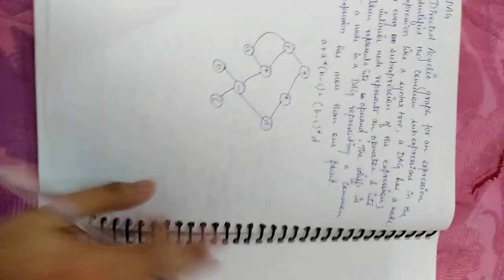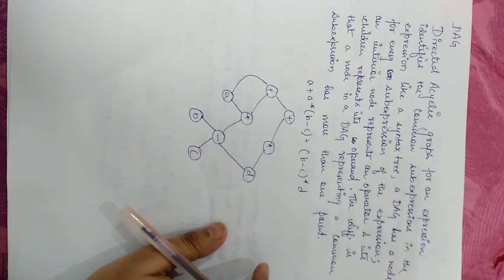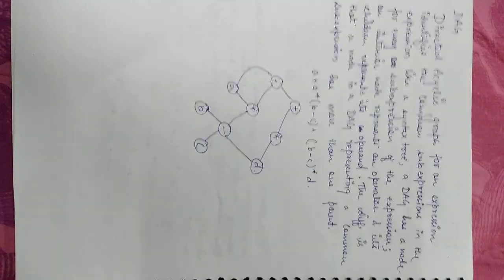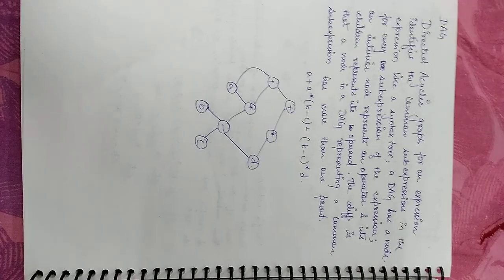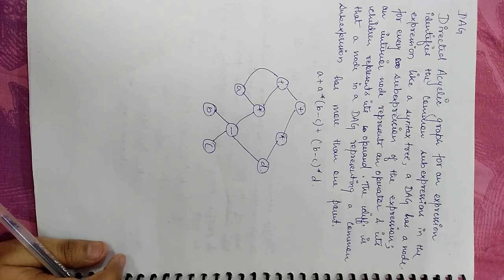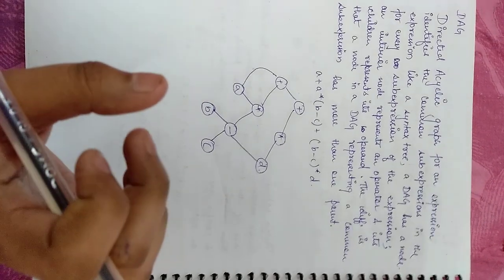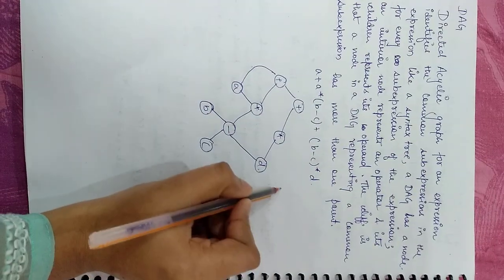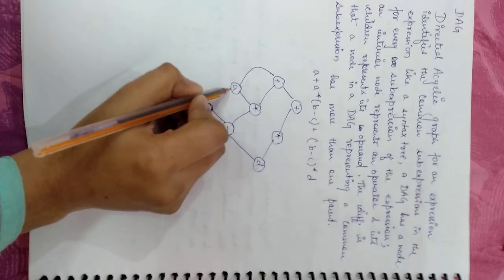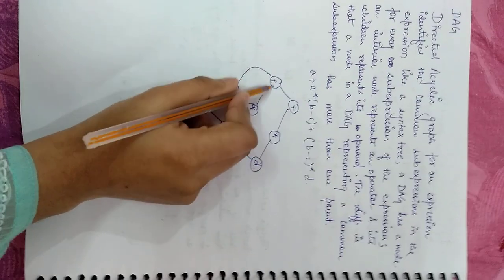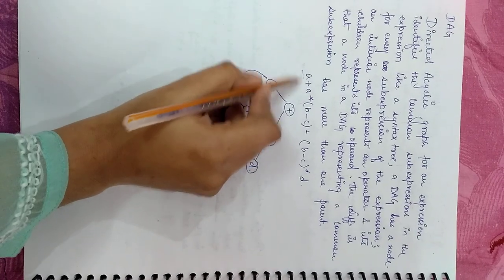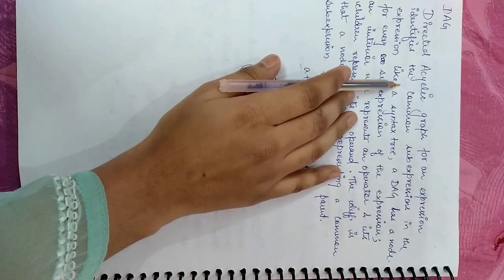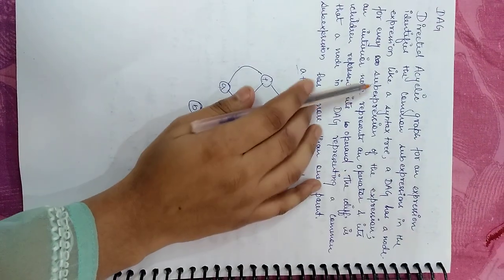Next is DAGs, that is directed acyclic graph. Directed acyclic graph is simple. What happens is that there are multiple parents of a child. This happens when we have a common variable. Directed acyclic graph can identify any expression. Common sub-expressions in the expression like in the syntax tree.